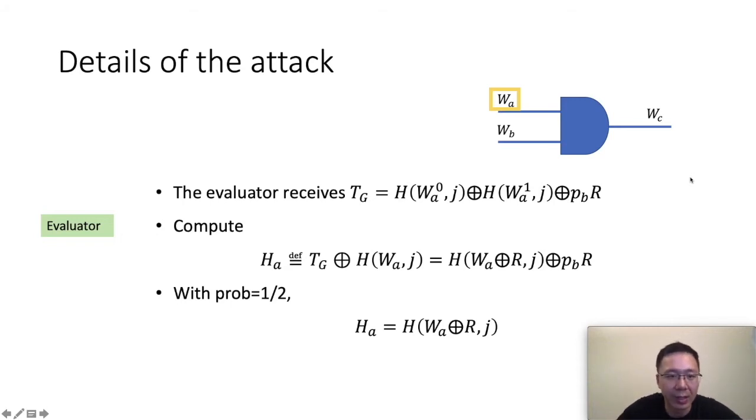And here we need to pay attention to these two elements. One is the T_g in the garbling table. It's a linear combination of the hash of the zero label and the one label. And another is the W_A label in the input wire. Here is the details of the attack. After the evaluator receives T_g in the garbling table, trying to compute W_A, which equals to T_g xor the hash of W_A and j. This j is a gate identifier. It's just a number indicating which gate it is. And Pb is just a random bit. So there is a one-half chance that Pb will equal to zero. In this situation, this term is cancelled.